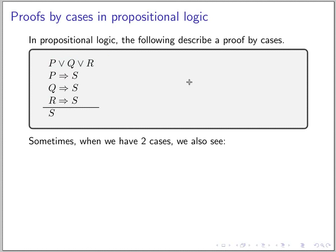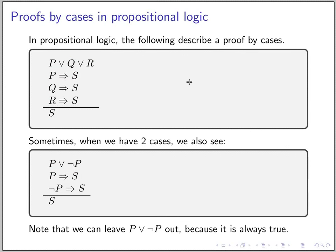In many cases, when we only have two cases, we usually see something like this: if P is true, then S; if not P is true, then S. Then we conclude that S. We can usually leave this part out; we don't need to prove it because this is a tautology. It's always true: either P or not P.